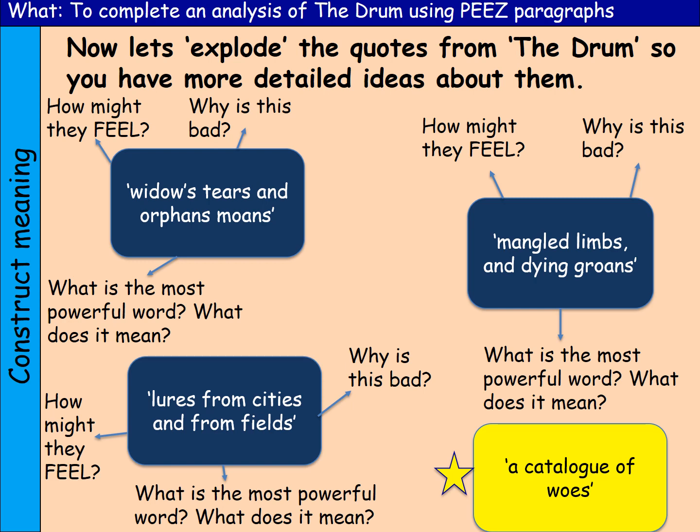I want you to do a similar exercise with the two other quotes in navy blue. There's 'mangled limbs and dying groans', and 'lures' — remember, lures means to persuade or entice someone — 'from cities and from fields'. If you want to have a go at the star challenge, the other quote is the last line of the poem: 'a catalogue of woes'. Pause the video here and complete that task.